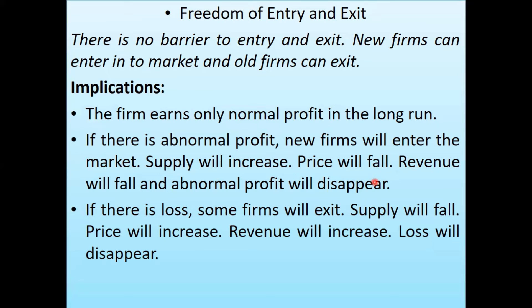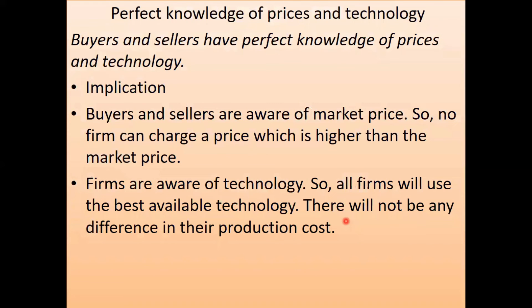The next feature is perfect knowledge of price and technology. Every buyer and seller has perfect knowledge about the prices offered in the market, and sellers are well aware about the technology and mode of production. Due to this reason, there will be no significant differences in production cost. This is another characteristic we see in a perfect competitive market.